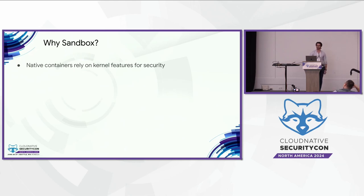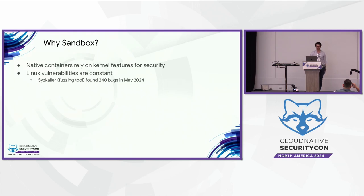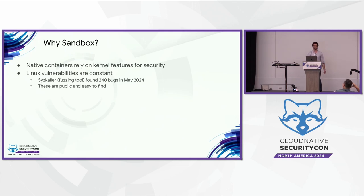One such measure is Syscaller. Syscaller is an open-source kernel fuzzing tool developed by Google that runs continuously, posting on a dashboard random C programs it generates that crash the kernel in various ways. It posts these findings for everyone to see, so these bugs are really easy to find. Although there are great people working hard to fix these issues constantly, the sheer volume makes it so that kernel developers can't possibly address all of them.